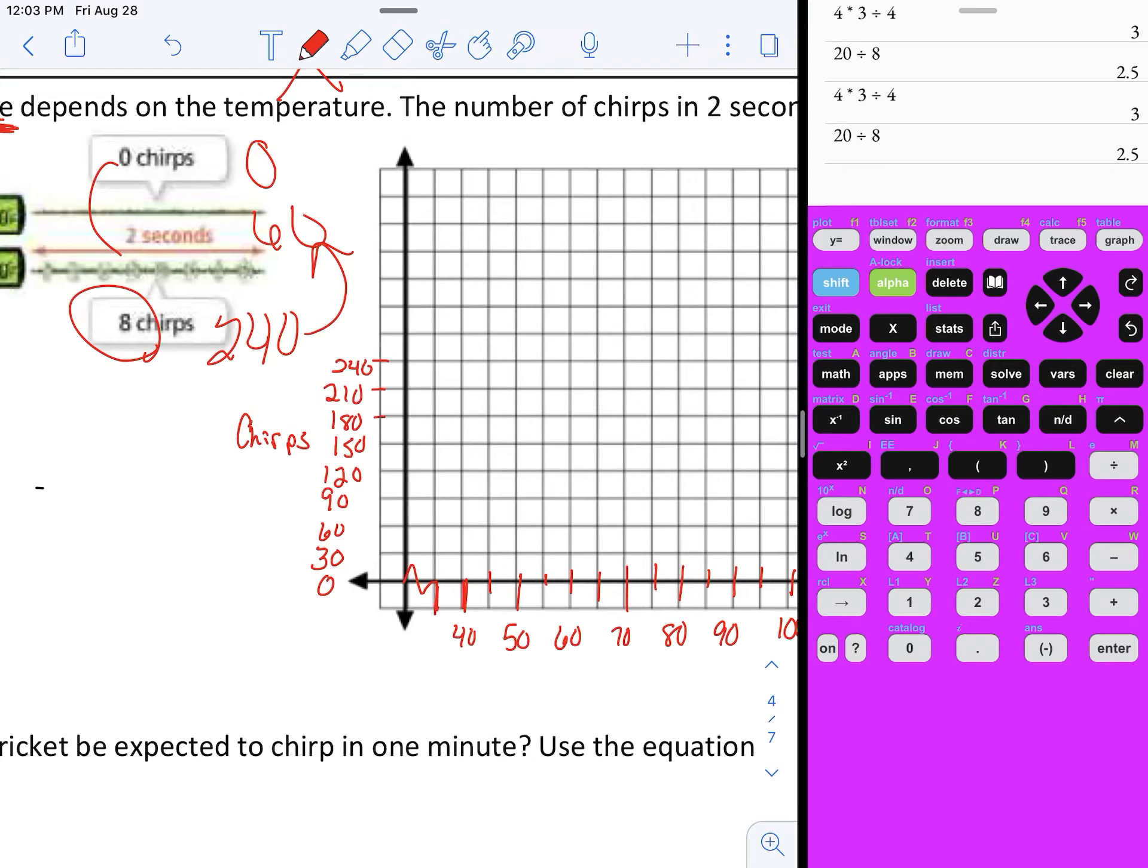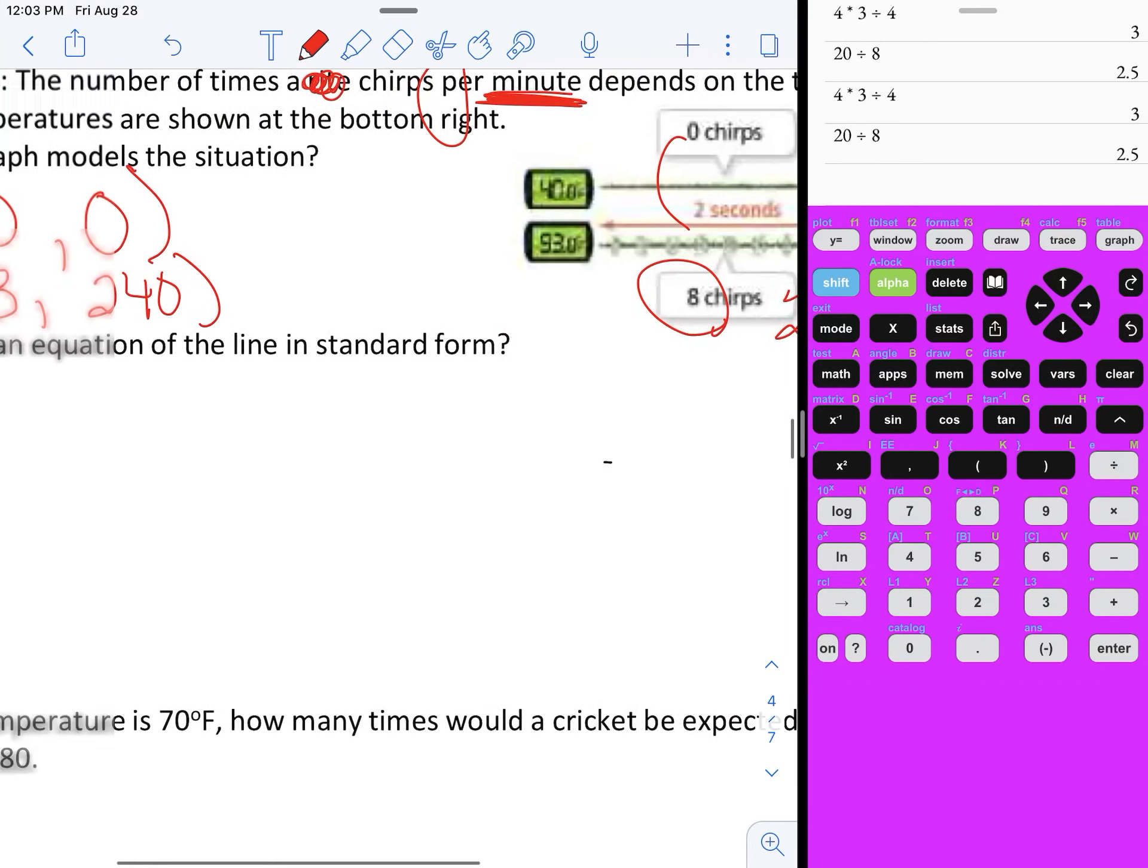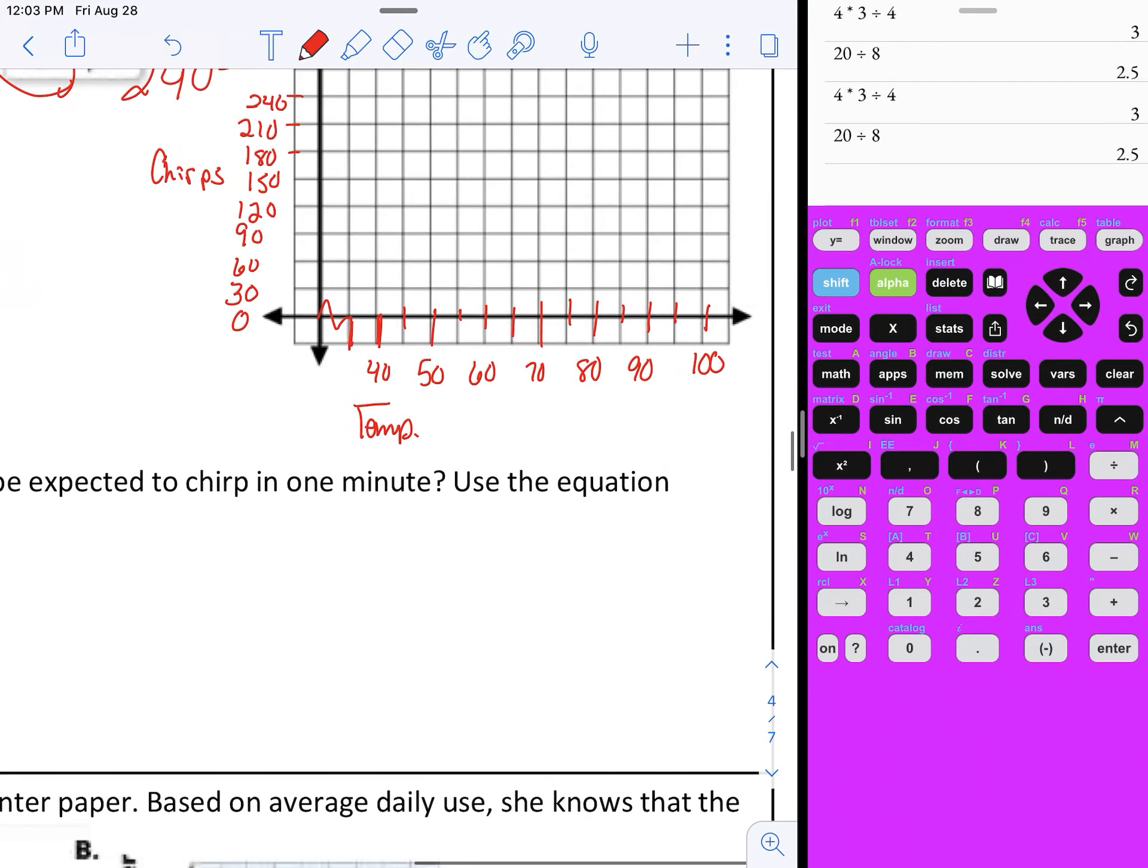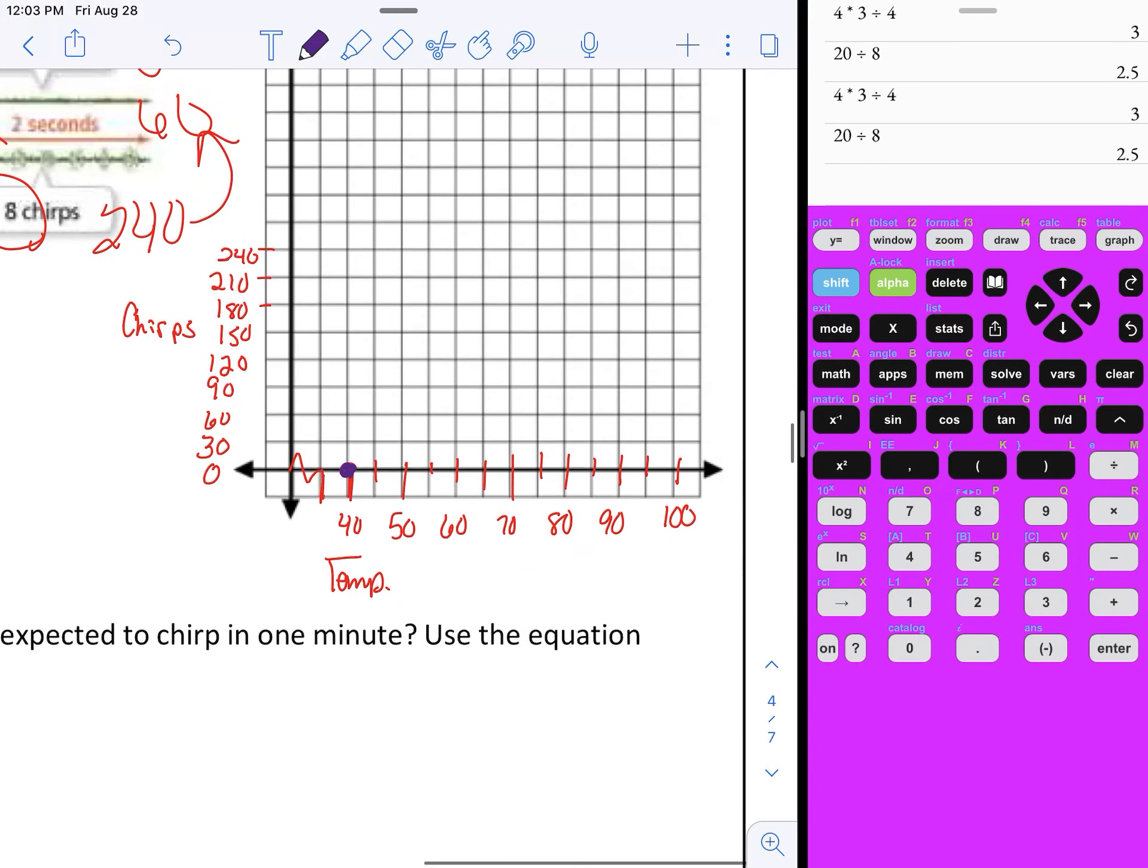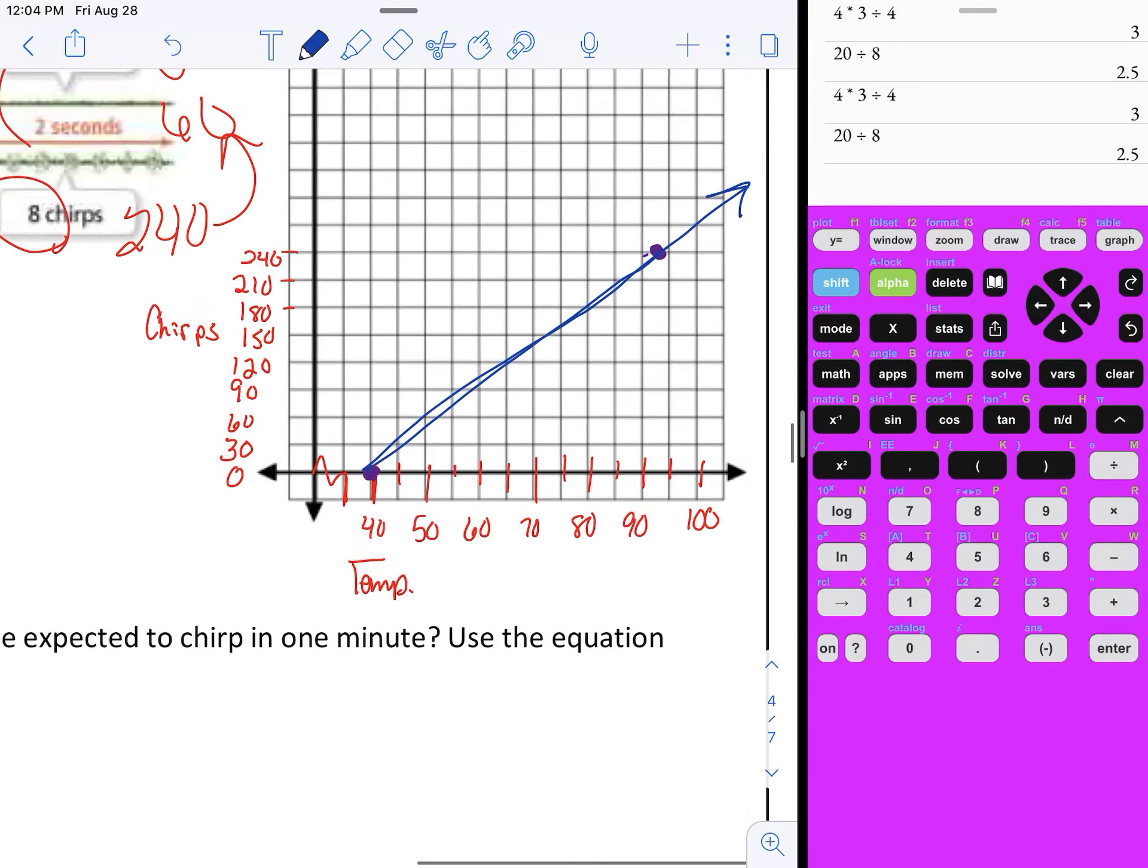This is my temperature outside. My first point is 40, 0. Over 40, up 0, is right there. I'm going to change colors because it's really blending in. My other point is 93, 240. So 93, 240 - this would be 93, watch these mad graphing skills. I have an arrow going to the right because they could potentially increase, but they're not going to go into the negatives.